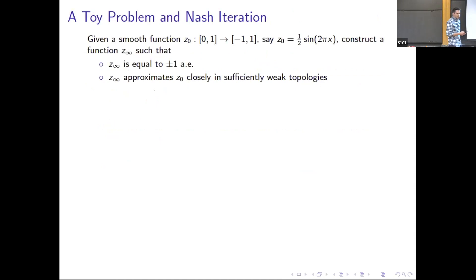I want to start with a toy problem. My apologies if you've seen this before or if you're one of the two authors of the survey paper from which I learned this example. Suppose I give you a smooth function, say one-half of sin(2πx), and I want you to construct a function z_∞ which is equal to plus or minus one almost everywhere and approximates z_0 in sufficiently weak topologies. Of course this approximation can't be made in a point-wise sense or even in the mean, so I need a sufficiently weak topology for this to work.